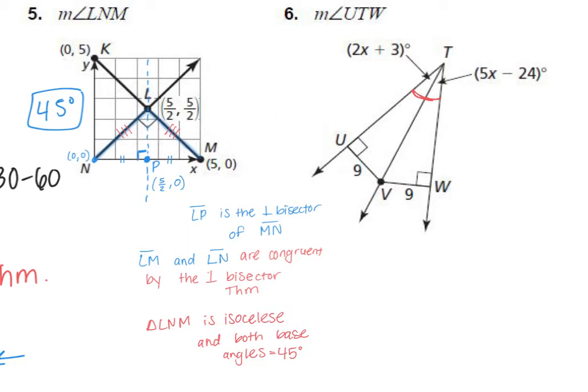First of all, what do we know from the diagram? Can we put any congruence marks on anything? Yes — UV is 9 and WV is 9, so we can put two congruence marks there. What theorem should we be using? It's not the perpendicular bisector theorem. We're going to use one of the angle bisector theorems — but is it the converse or the regular one? Converse.